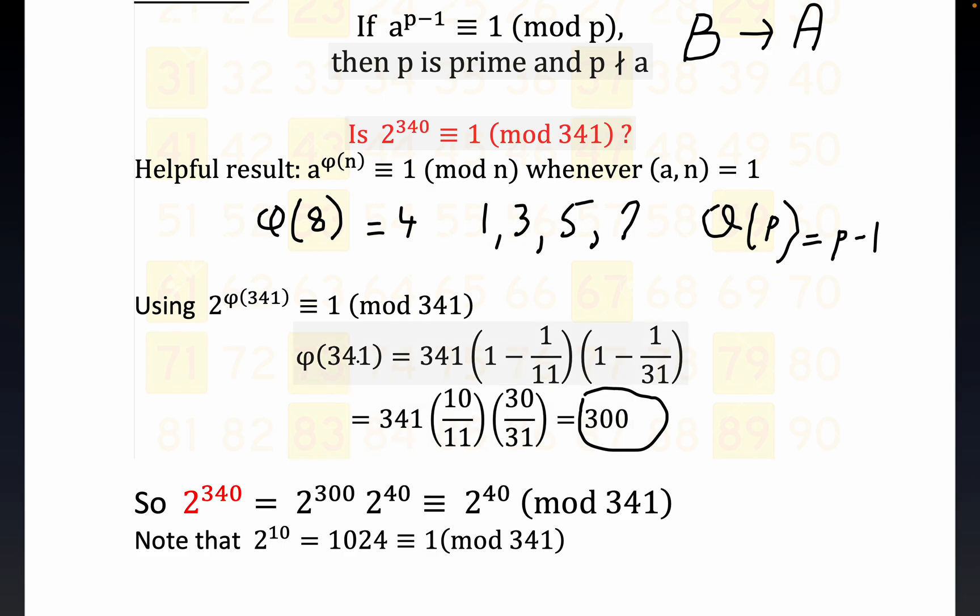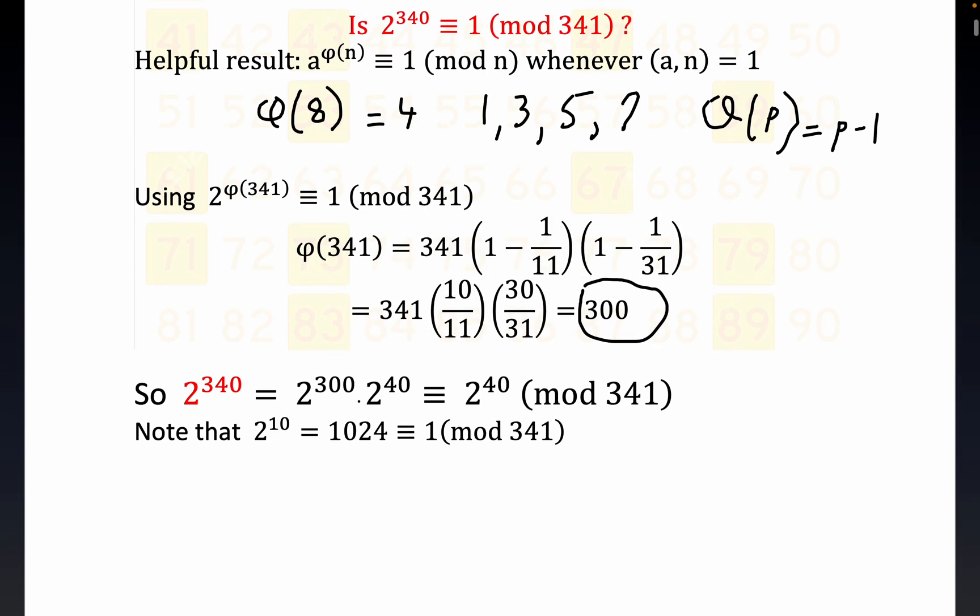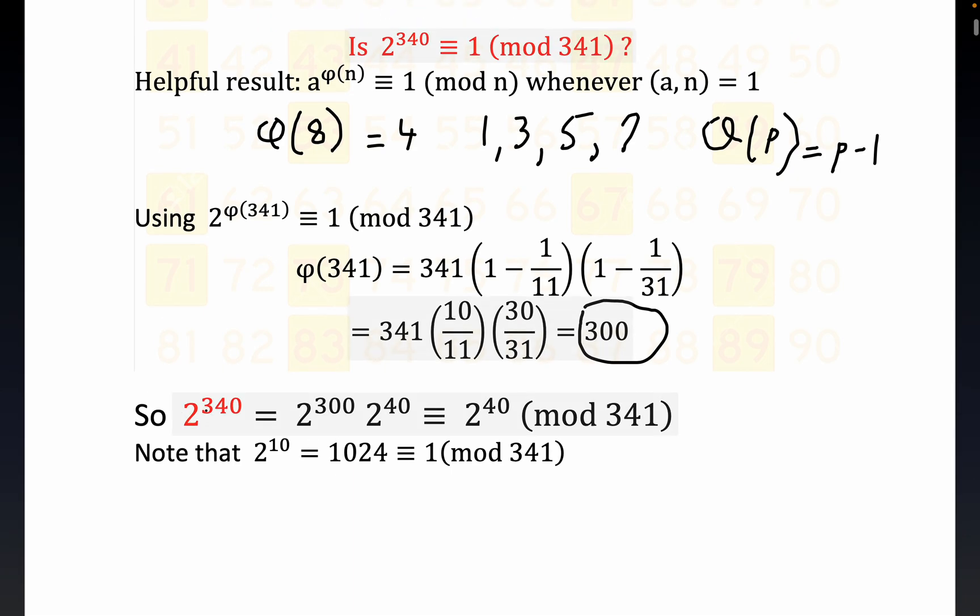If you didn't have this result to use, you would have to just list it out, just like we did right here, which would be prohibitive time-wise, just enumerating each one that's relatively prime. There's 300 numbers less than 341 that are relatively prime to 341. That turns out to be important because we can decompose 2^40 by the laws of exponents.